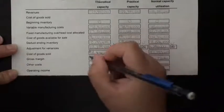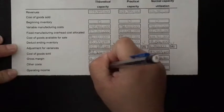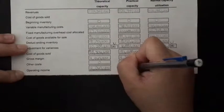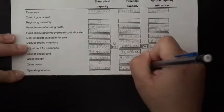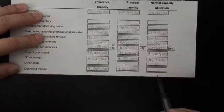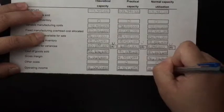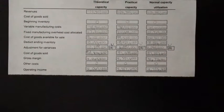So our operating income for theoretical capacity is $4,063,400. Operating income for practical capacity is $4,351,600. And operating income for normal capacity utilization is $4,756,400. That is how you compute operating income for theoretical, practical, and normal capacity.